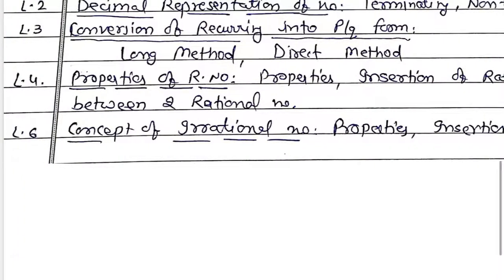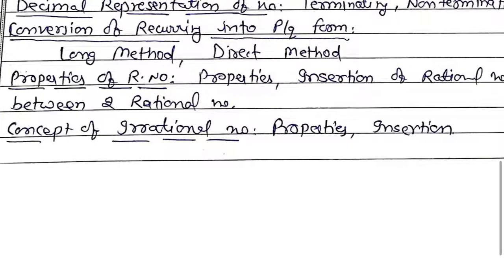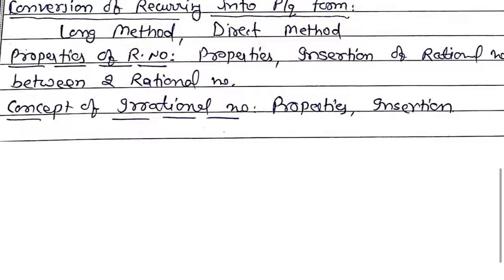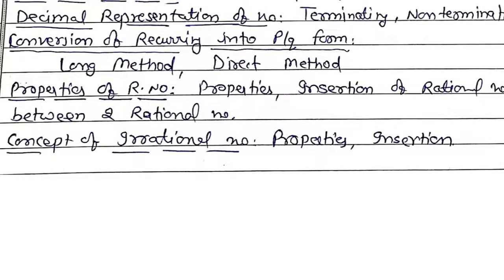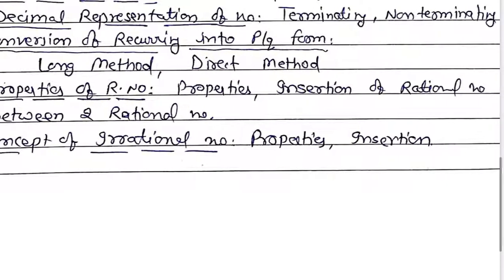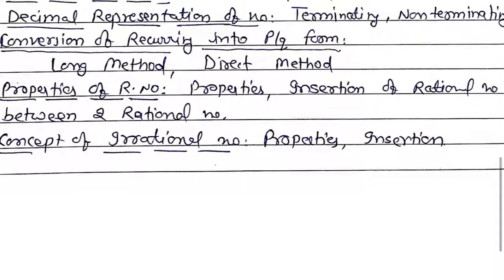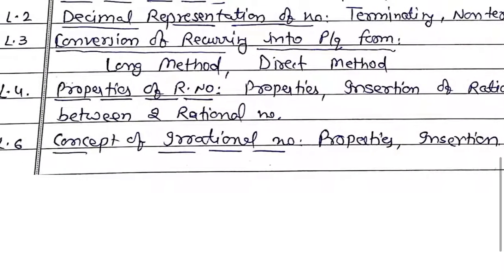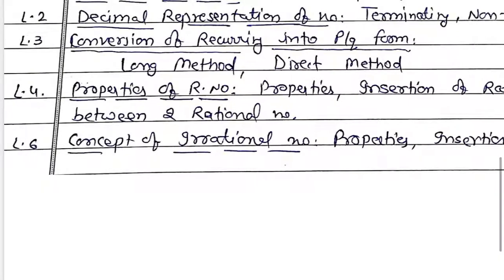Lecture 4 bhi aapko wahan par dekhna padega — properties of rational number, jis mein properties of rational number batayi hui hain. Usmein commutative law, associative law, distributive law, multiplicative inverse, additive inverse — yeh sari cheezein aapko wahan par detail mein mil jayengi. Saath saath, insertion of rational number between two rational numbers bhi dekha tha, jiski bhi humne teen methods wahan par dekhi thin.